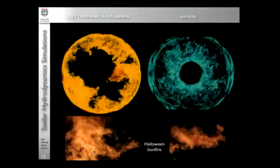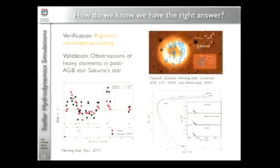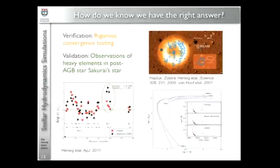But it leads to the important question: how do we know once we have done these simulations that we really have the right answer? Because if you can't prove that you have the right answer, who cares? We shouldn't care. We shouldn't pay any attention at all. One of the things that we do and that we pay a lot of attention to is rigorous convergence testing, which is basically the question: do we get the same answer if we increase the resolution? Are we solving the equations in the right way? The verification step. But the other important aspect is the validation, which is the question: are we solving the right equations? Do we include all the physics that we need? The only way to answer that question is by going to compare with real data.